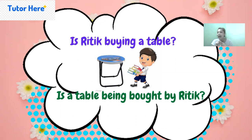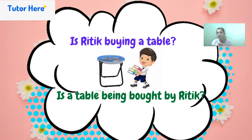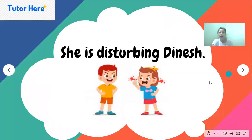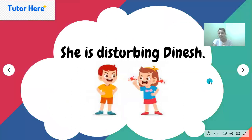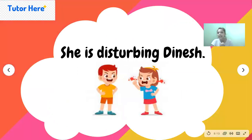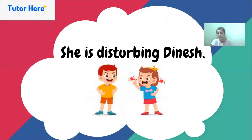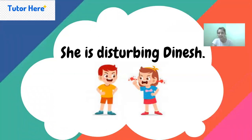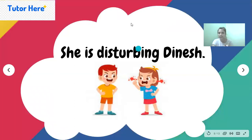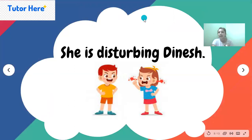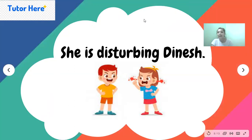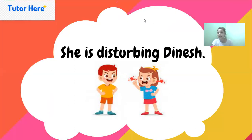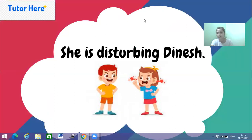In present continuous tense, all you need to remember is to add 'being' and change the first form of verb to the third form. Here is a question for you: 'She is disturbing Dinesh.' You can tell me the answer in the comment section. Till then, keep practicing active and passive voice. We'll meet in the next session — thank you so much!